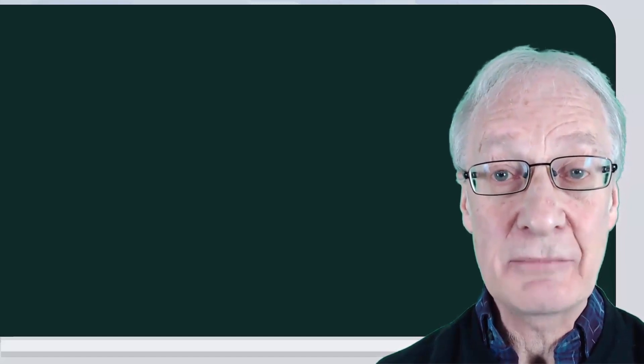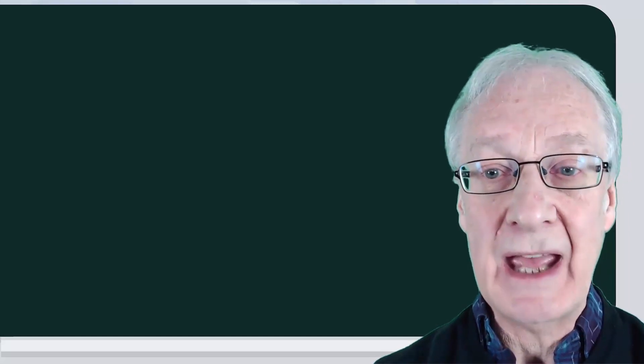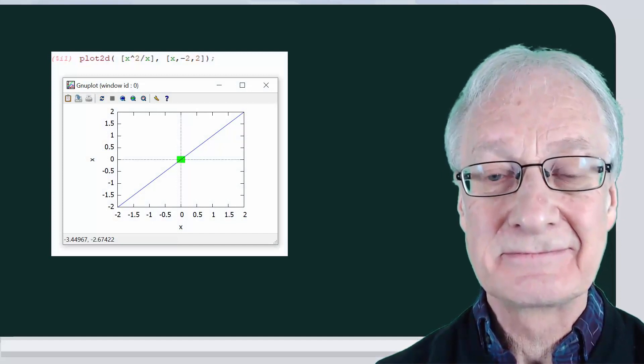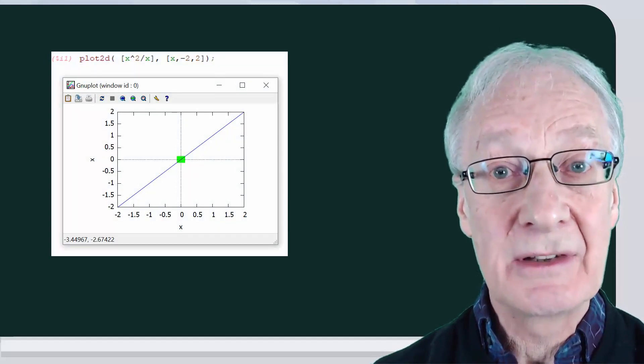The situation is complicated and controversial. For example, look what happens when we represent f of x equals x squared over x in maxima. The avoidable discontinuity doesn't appear. Why?